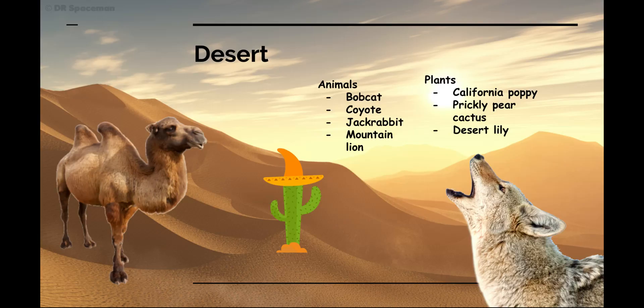One of the first habitats we'll be talking about are deserts. Deserts are regions in which very little rain falls, and because living things need water to survive, deserts are home to few plants and animals. Deserts tend to be either very hot or very cold. Not all deserts are hot — both the Arctic and Antarctica have very little rain and are considered to be deserts. Desert animals usually have special adaptations for coping with the lack of water and extreme temperatures.